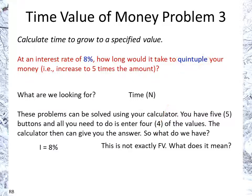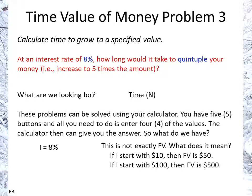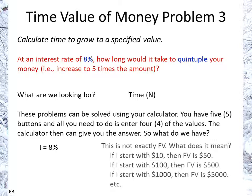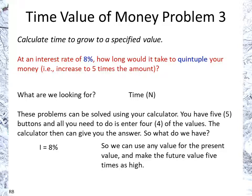Quintuple — that's not exactly a future value directly stated. What does it mean? Well, if I start with $10, then the future value would be $50. If I had $100, it would be $500. If I had $1,000, it would be $5,000. So you get the idea — we can enter any number for present value and just make the future value 5 times as high.